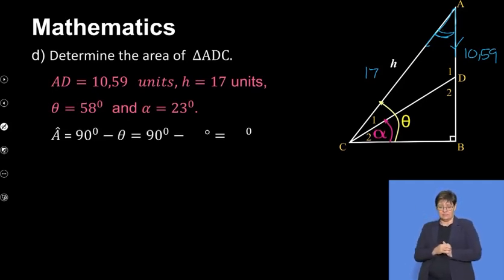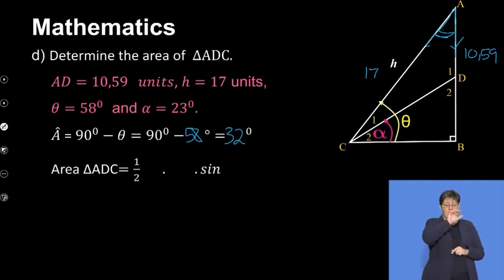Angle A, which was 90 minus theta, must now be 90 minus 58, which is 32 degrees. So area of ADC will be half of 17 times 10.59 times sine of 32 degrees.